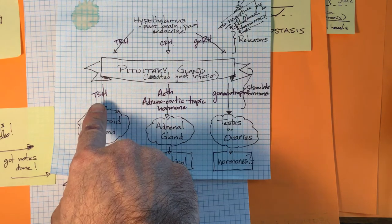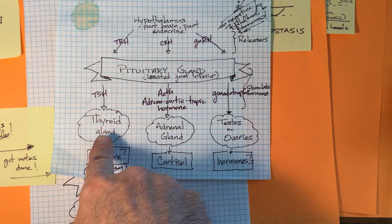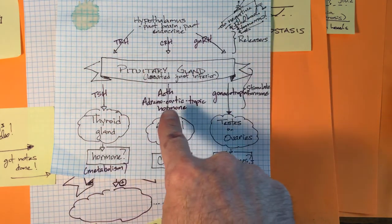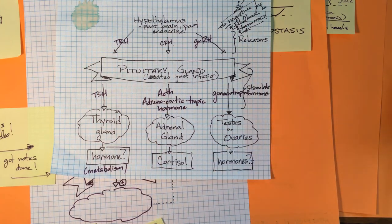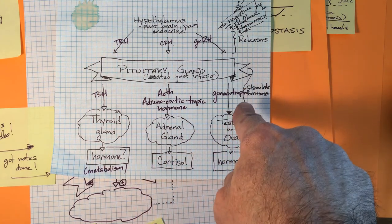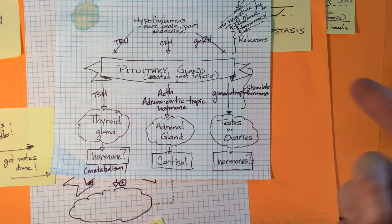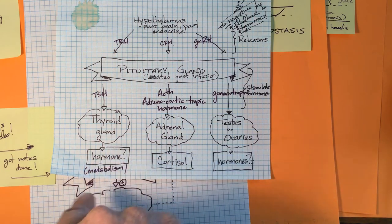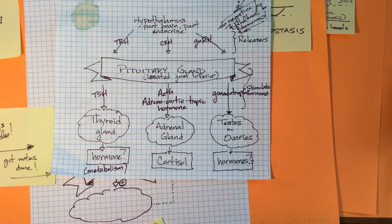So thyroid stimulating hormone stimulates the thyroid. Who'da thunk it? ACTH, adrenal corticotropic hormone, stimulates the adrenal gland and gonadotropin stimulates the testes or the ovaries, depending on which ones you have. And then they'll release their main hormones to influence the body.